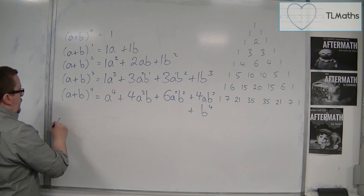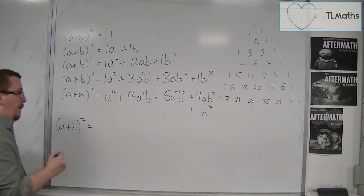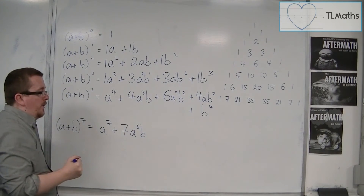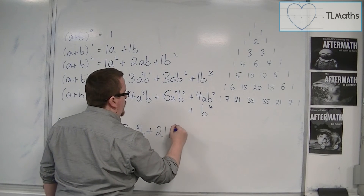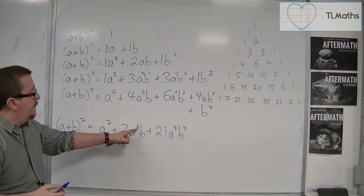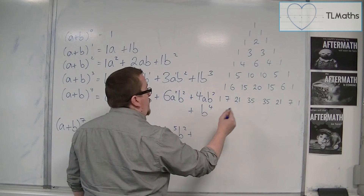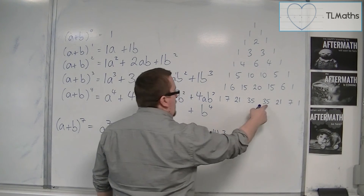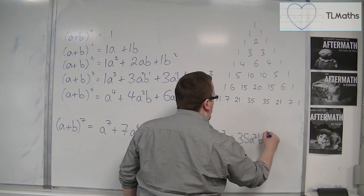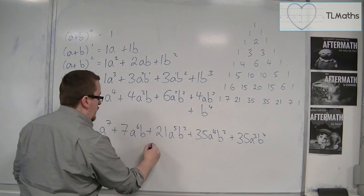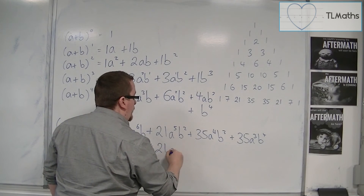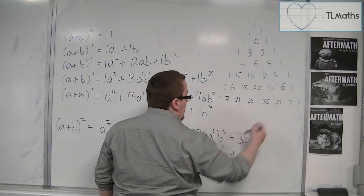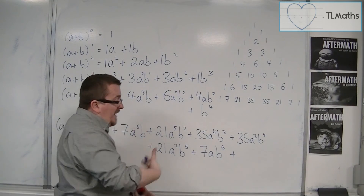So if I want to write down a plus b to the power of 7, that would be a to the 7, plus 7a to the 6 b, plus 21a to the 5 b squared — notice 6 and 1 is 7, 5 and 2 is 7 — then 35a to the 4 b cubed, then 35a cubed b to the 4, then 21a squared b to the 5, then 7a b to the 6, and finally 1 lot of a to the 0 b to the 7, so just b to the 7.